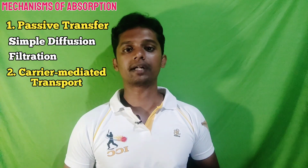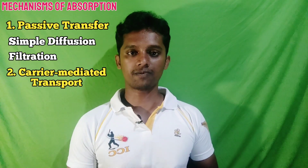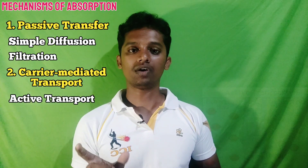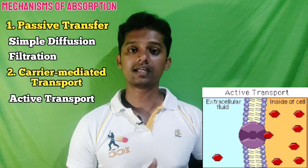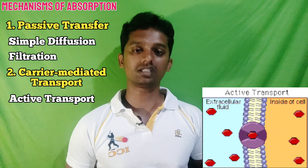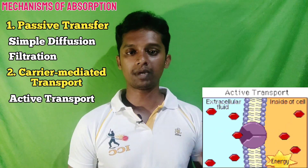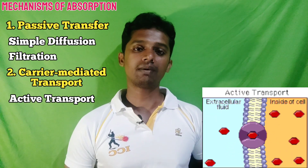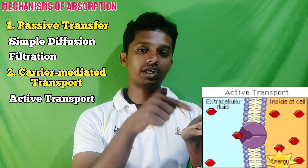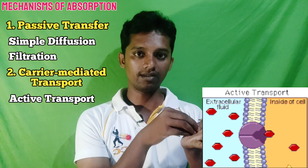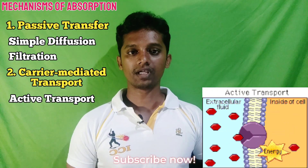The second major category is carrier-mediated transport, where a carrier helps the drug cross the membrane. There are two subtypes: active transport and facilitated diffusion. Active transport requires energy, and the direction of transportation is against the concentration gradient. Carrier proteins in the cell membrane bind the drug, form a drug-carrier complex, cross the cell membrane, and then release the drug on the other side. This is active transport.